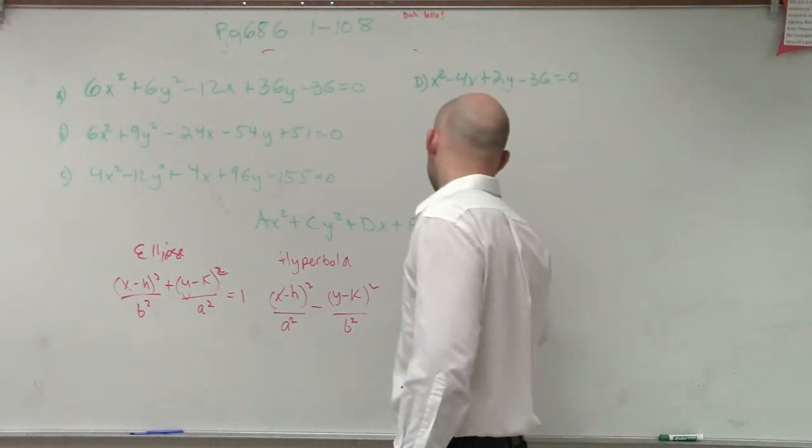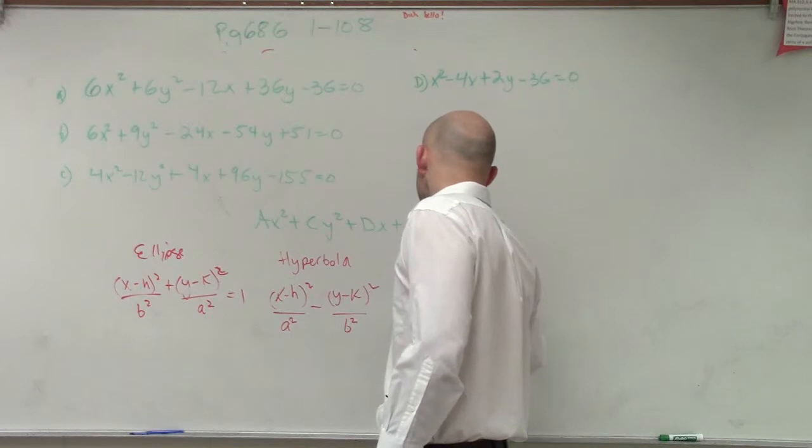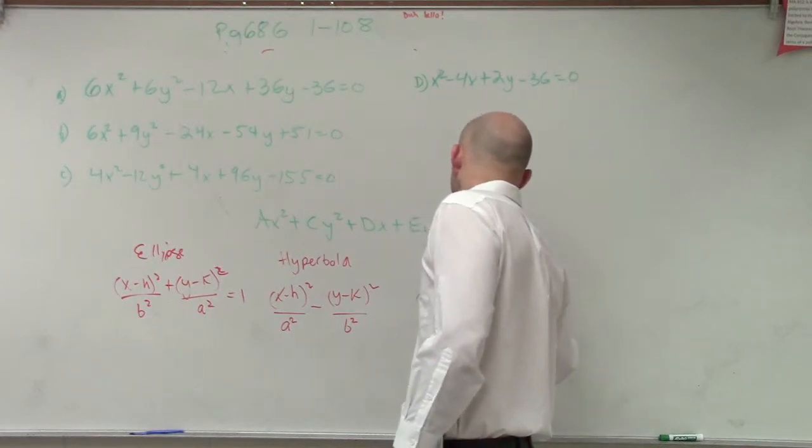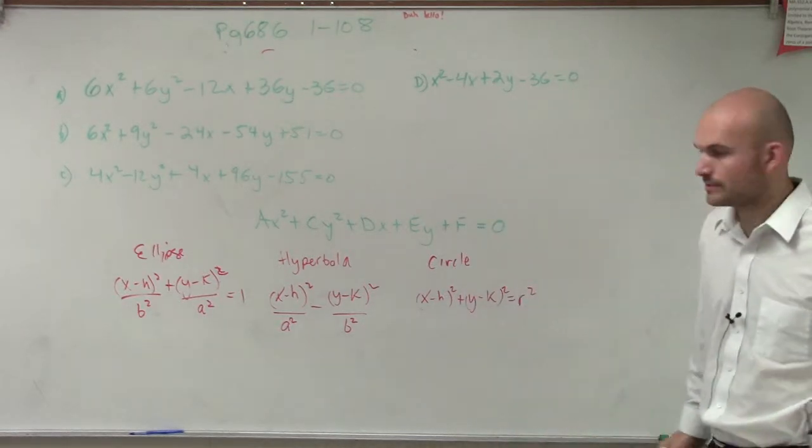Let's do the equation of a circle. A circle would be (x minus h) squared plus (y minus k) squared equals r squared.